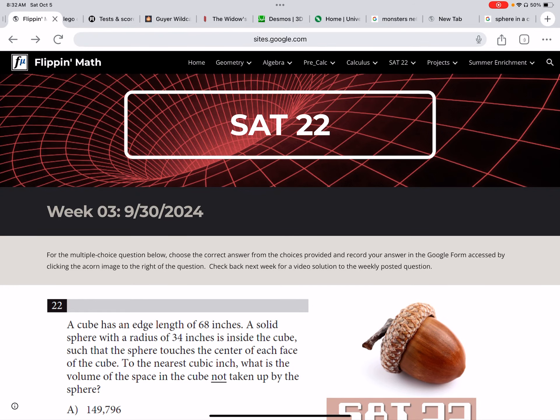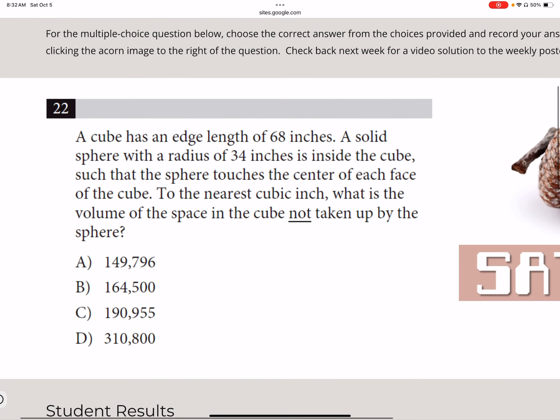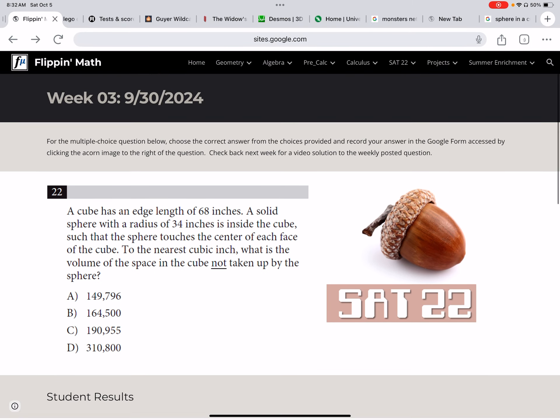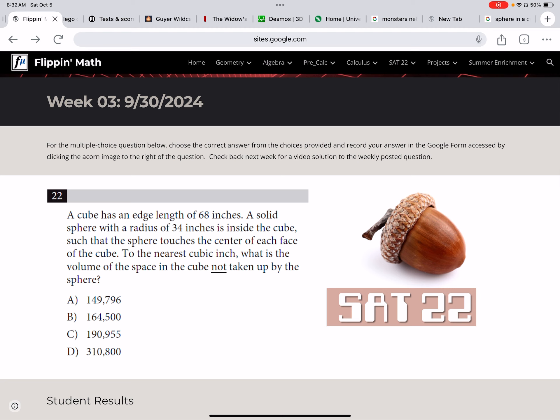All right, here we are with our weekly SAT question. A cube has an edge length of 68 inches. A solid sphere with a radius of 34 inches is inside the cube, such that the sphere touches the center of each face of the cube. To the nearest cubic inch, what is the volume of the space in the cube not taken up by the sphere? And so we have our traditional four answer choices.